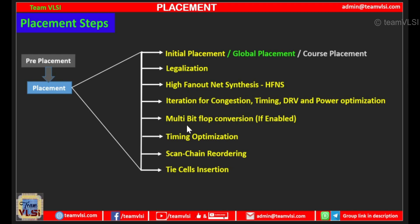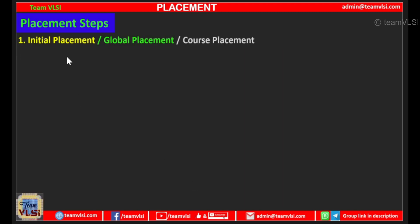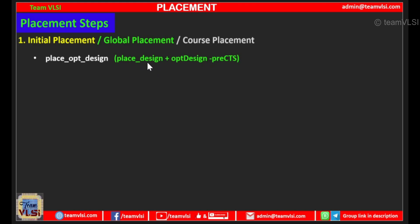Now we will see each step in detail. The first step is initial placement, or global placement, or coarse placement. We run the command 'placeDesign' in this stage. Previously there was a command 'place_design -plusOpDesign -preCTS'; now it is converted into a single command 'placeDesign'. I am talking about the Innovus tool. There is a similar command in ICC tools — if you know the exact command, please comment below.